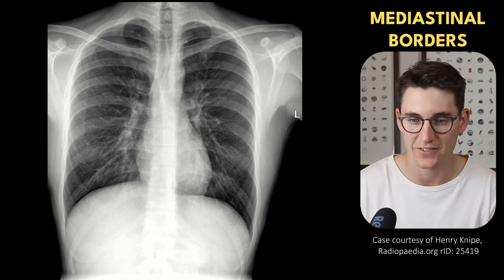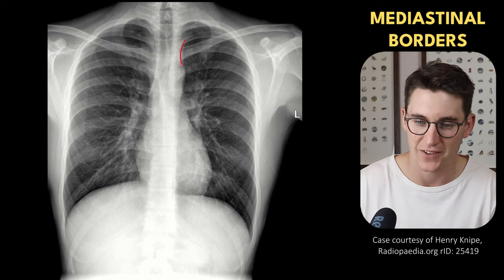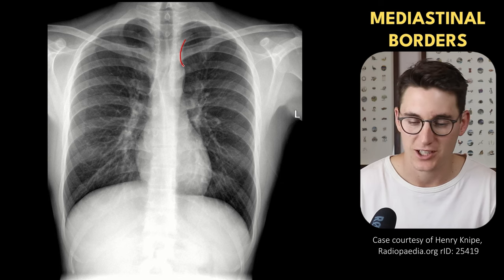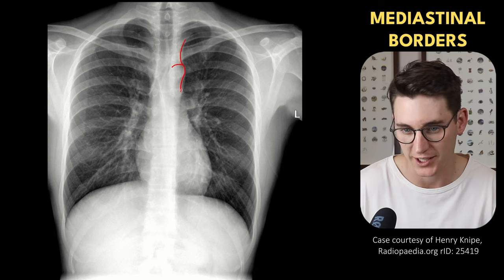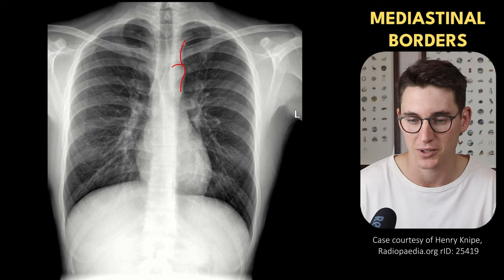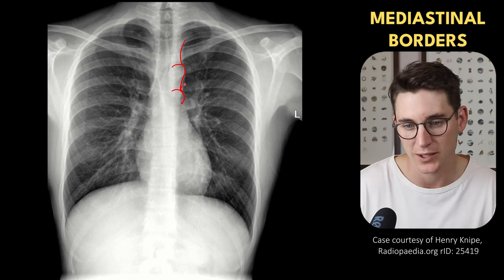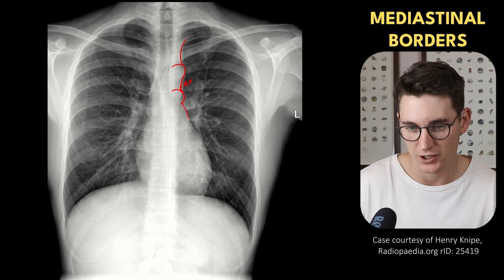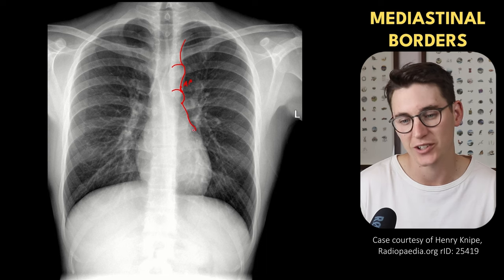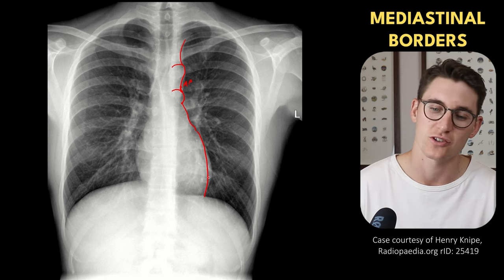Starting in the left upper zone on this radiograph, we can identify the first border here — this is the left subclavian artery coming off the arch of the aorta. That goes without saying that this next knuckle here is the aortic knuckle or the aortic arch where that left subclavian artery is coming off. Below that we have our pulmonary trunk, which makes this concavity known as the AP window — the aortopulmonary window. Down from the pulmonary trunk is the left atrial appendage, which then extends down the left heart border as the left ventricle.